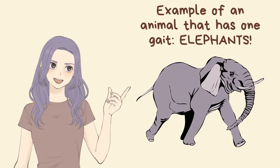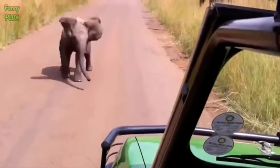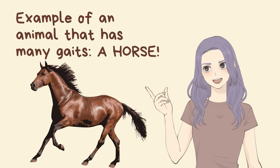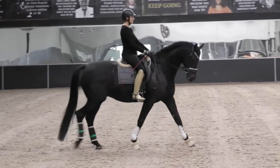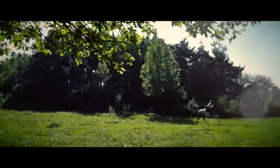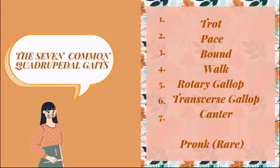Some animals possess only one gait. For example, elephants can only walk, and if it runs, it only ambles, which means to walk in a fast manner, while others possess many gaits. A horse may move at a low speed, which means to walk; moving at higher speed means to trot; and at its top speed, it gallops. The seven common quadrupedal gaits are trot, pace, bound, walk, rotary gallop, transverse gallop, canter, and pronk, which is a rare type of gait.